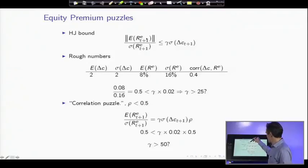Well, market Sharpe ratio, 8 over 16, that's 0.5. So see, if that number, sigma of delta C is 0.02, 2%, that means we need a risk aversion of 25. 25 is a lot of risk aversion.